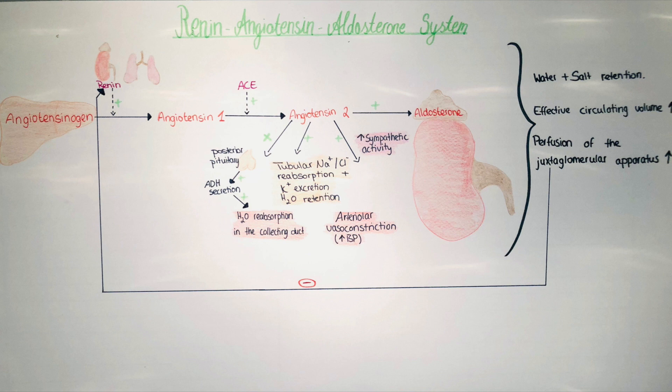This video will serve as an introduction to the next video, which will be about the pharmacology of blood pressure medications acting upon the renin-angiotensin-aldosterone system. But to understand the mechanism of these drugs, we first have to understand the renin-angiotensin-aldosterone system, how it affects the body and how it regulates blood pressure, electrolyte balance, and even sympathetic activity.